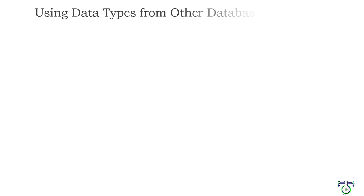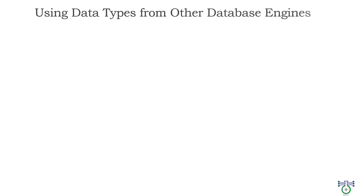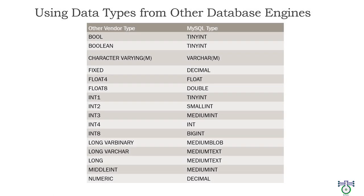MySQL provides an easy way to import table definitions from other database systems using mapping of data types. For instance, bool and boolean types from other vendors are mapped to tiny int in MySQL. Similarly, character varying is mapped to varchar and numeric is mapped to decimal. Other mappings include float4 to float, float8 to double, int1 to tiny int, int2 to small int, int3 to medium int, int4 to int, int8 to big int, long varbinary to medium blob, long varchar to medium text, and middle int to medium int. By using these mappings it becomes easier to migrate data tables from older SQL databases to MySQL without worrying about compatibility issues.